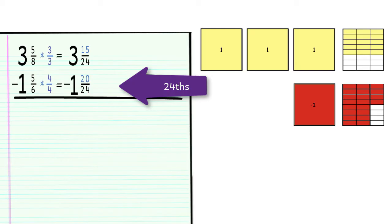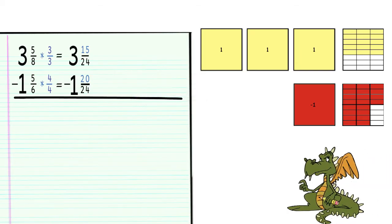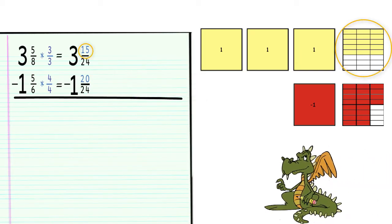Now, before we can subtract, we need to have more twenty-fourths. Since if we only have 15 twenty-fourths, we can't take 20 of them away. So where are we going to get the extra twenty-fourths?